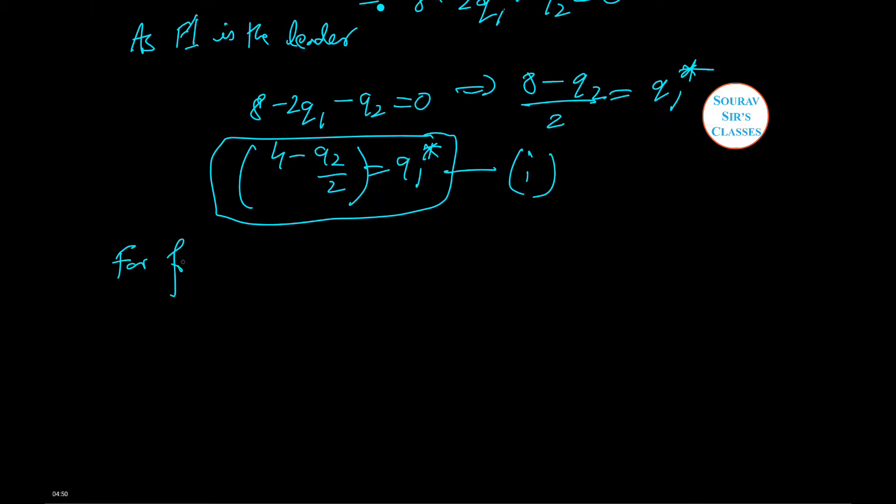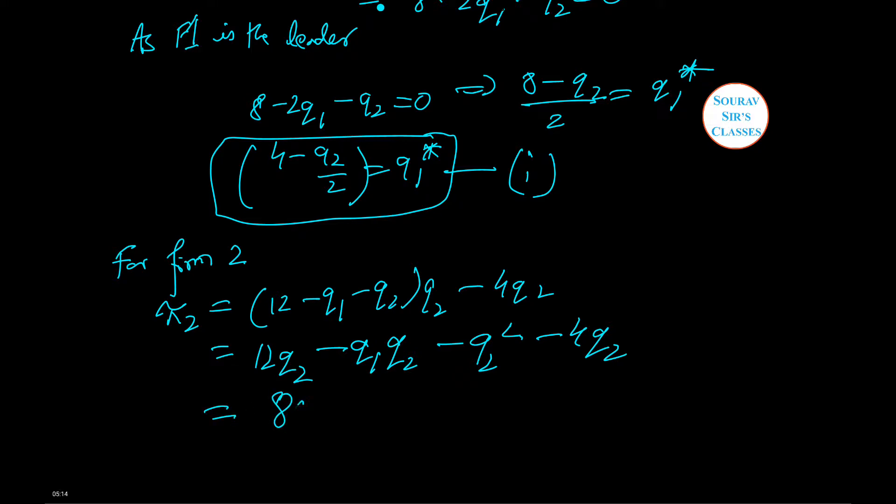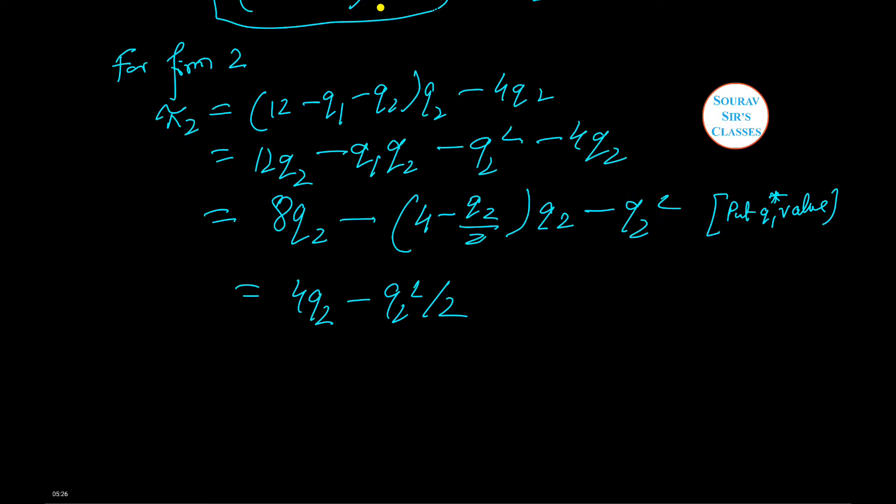For firm 2, we have pi 2 equals (12 minus Q1 minus Q2) times Q2 minus 4Q2, which equals 8Q2 minus Q1Q2 minus Q2 squared. Substituting Q1 equals 4 minus Q2 by 2, this simplifies to 4Q2 minus Q2 squared by 2. Differentiating del pi by del Q2 equals 4 minus Q2, which equals 0. Thus, Q2 equals 4.